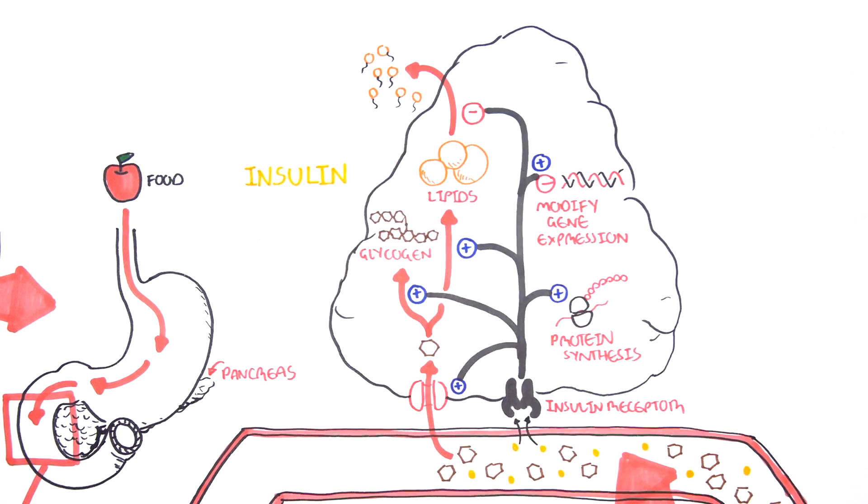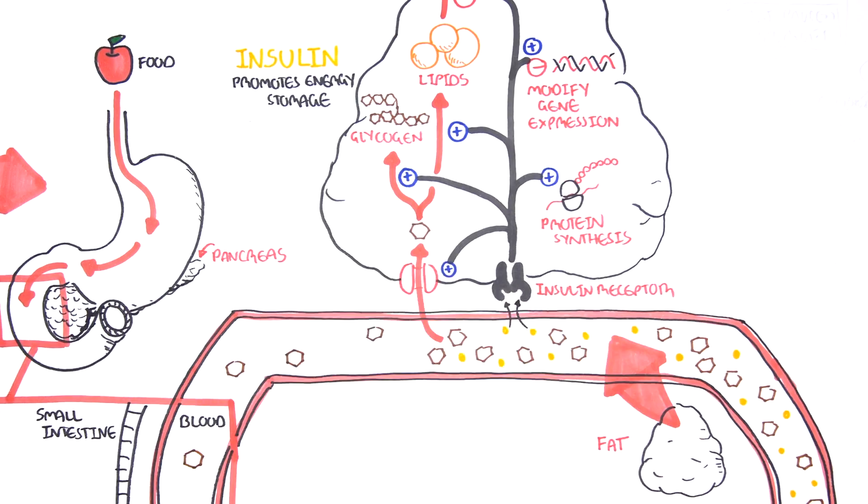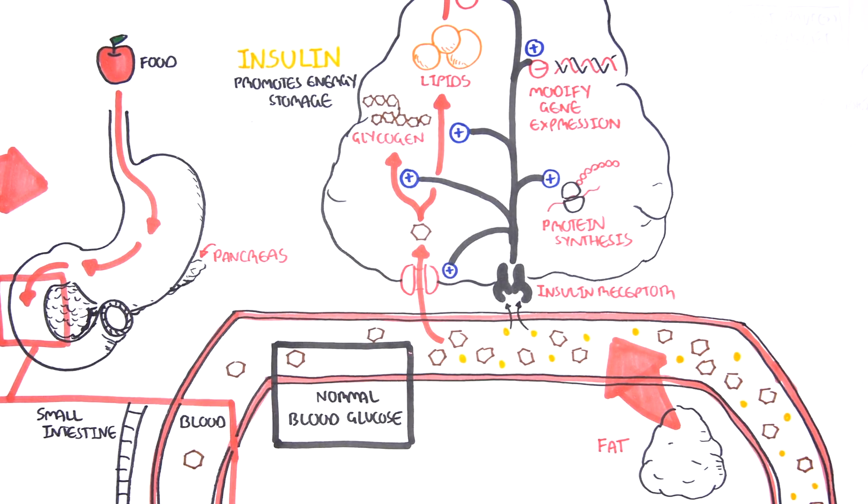Overall, insulin promotes energy storage within fat cells, promoting the clearance of glucose from the blood, returning blood glucose back to normal.